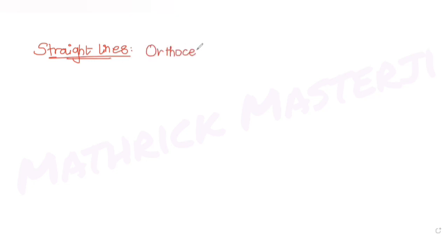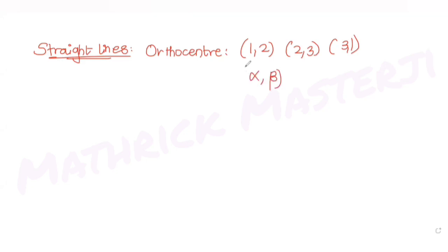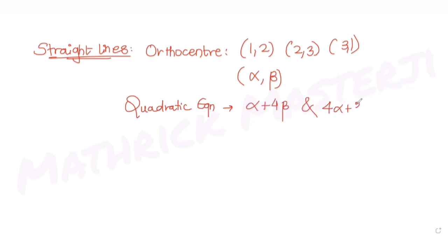The question tells us that if the orthocenter of the triangle whose vertices are (1,2), (2,3), and (3,1) is alpha comma beta, then we have been asked to find a quadratic equation whose roots are alpha plus 4 beta and 4 alpha plus beta.